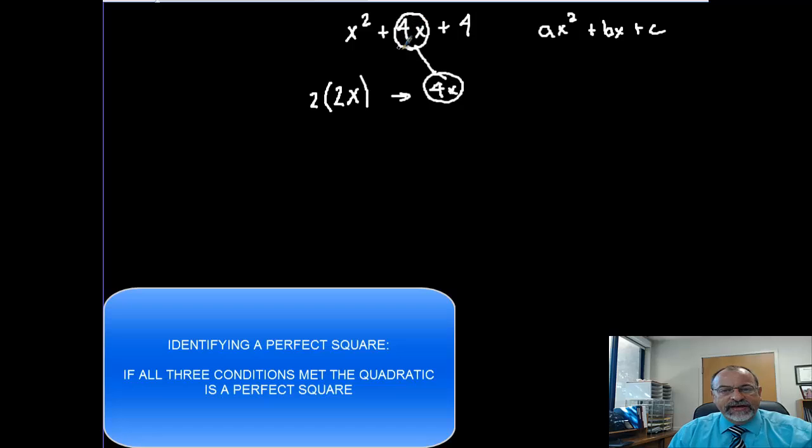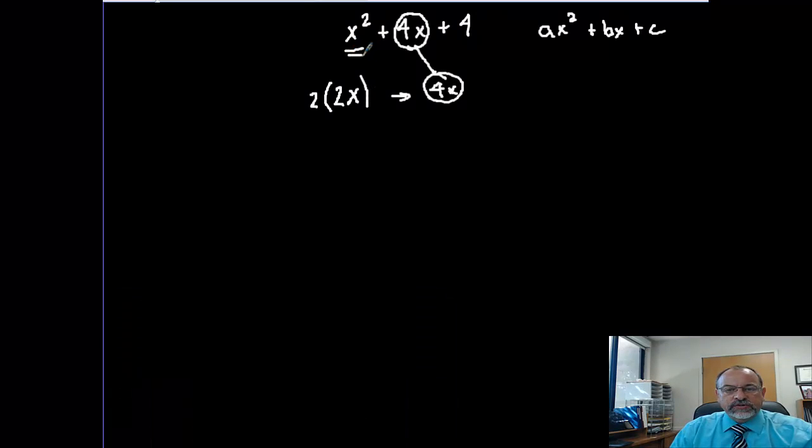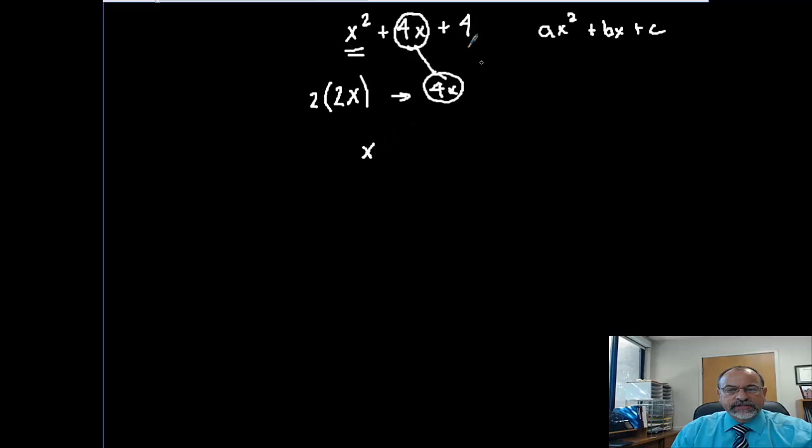So, the way to factor a perfect square, once we have identified it as a perfect square looking at those three things, then it's very easy to factor. I take the square root of this, which is x. I take the square root of this, which is 2. And I take this sign, whatever it is. If it's a plus, this will be a plus. If it's a minus, that will be a minus.